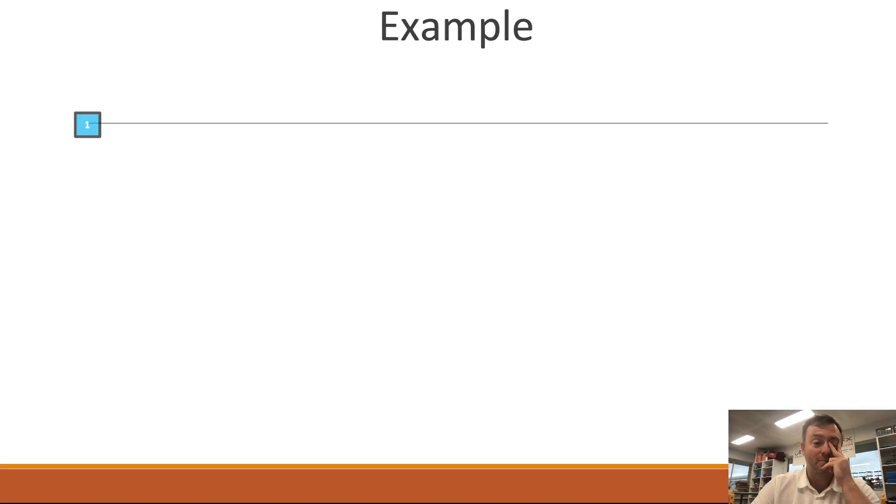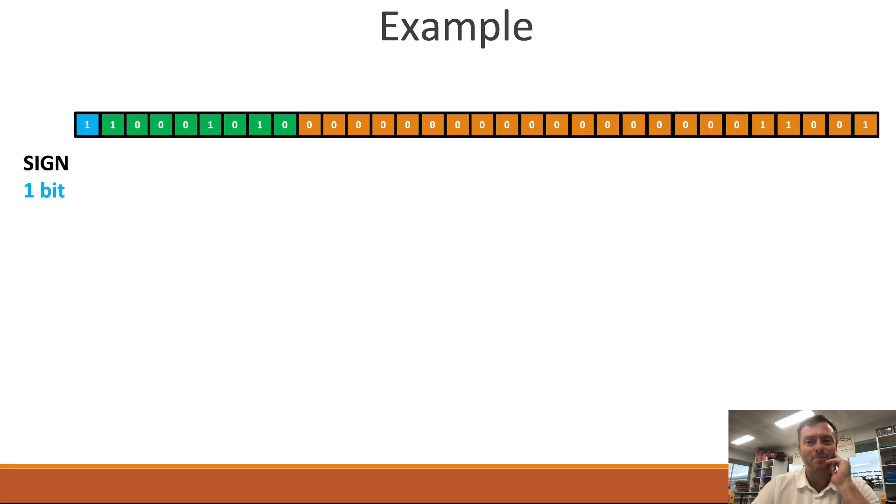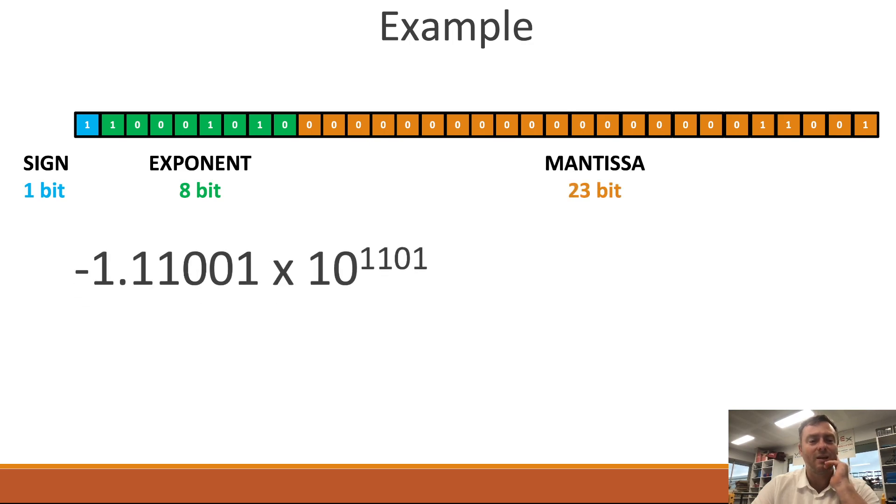So a real simple example if I made this number, so 1110010100100100100100101. This is the exponent. This is the Mantissa at the end. That's the same as negative 1.11001 times 10 to the power of 1101.